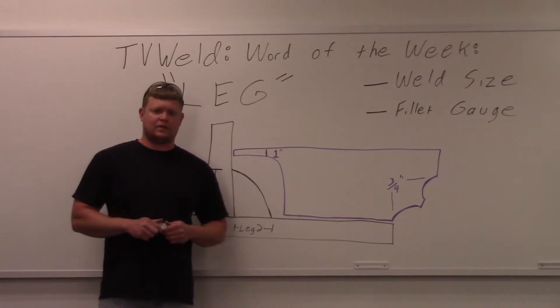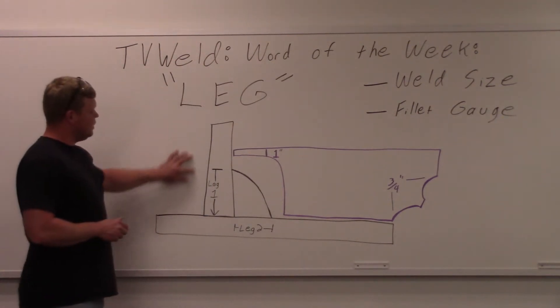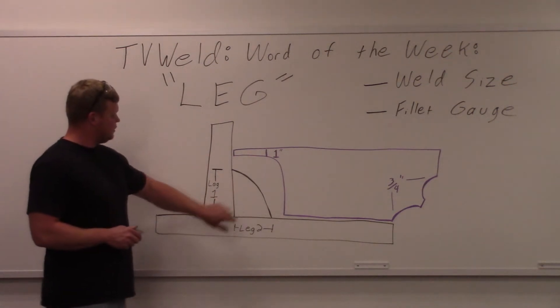Every fillet weld that is done has two legs. I did a mock-up of the T-joint right here and you can see this is our fillet weld right here. Leg one and leg two.